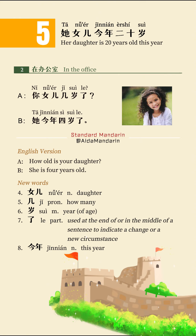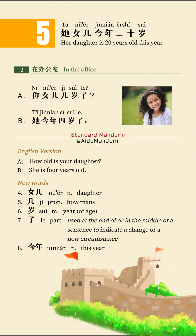Text two: 你女儿几岁了? — How old is your daughter? 她今年四岁了 — She is three years old. Vocabulary: 女儿 (Daughter), 几 (How many?), 岁 (Year of age), 了 (Used at the end of or in the middle of a sentence to indicate a change or a new circumstance), 今年 (This year).